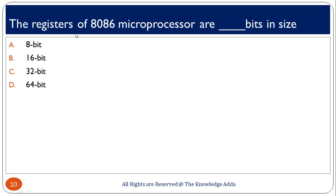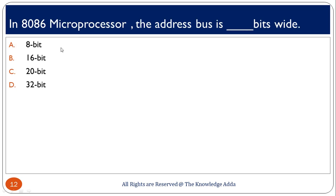The registers of the 8086 microprocessor are 16-bit because it is a 16-bit microprocessor. We call a microprocessor 16-bit, 32-bit, or 8-bit depending on the capacity of its registers — how many bits a particular register can contain. In the 8086, every register stores 16-bit data, so option B is correct.